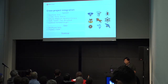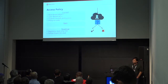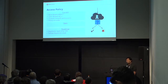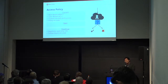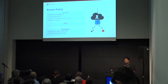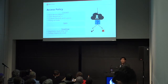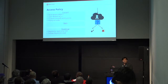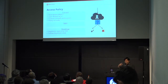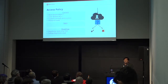Also Barbican's Tempest plugin, and within Stein, Deckhand, Rally, and Triple-O. On access policies: we use Oslo policy but have added some Barbican-specific extensions. For example, on a secret you can add an ACL allowing someone outside your project to access that particular secret, or you can specify that a secret is private so only the creator — not everyone else in the project — can access it.